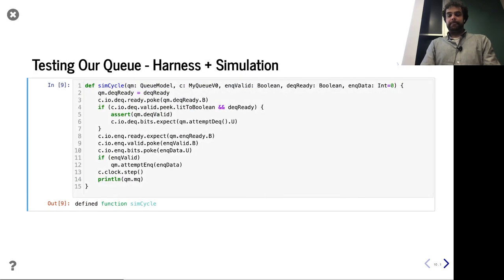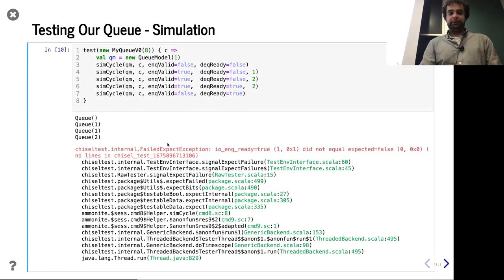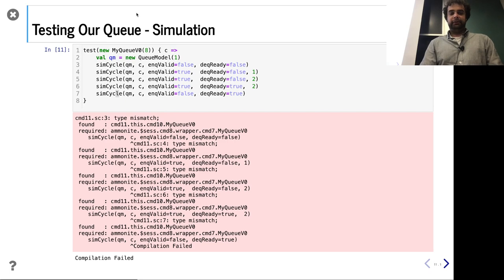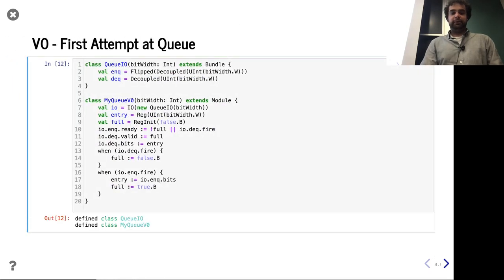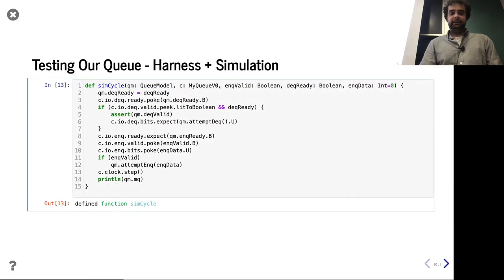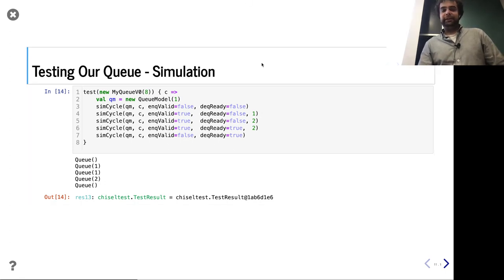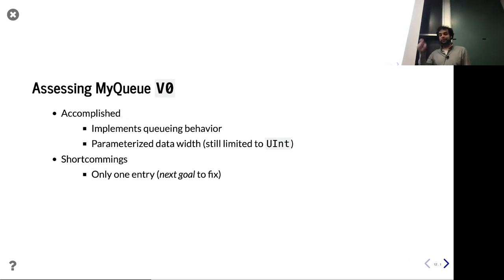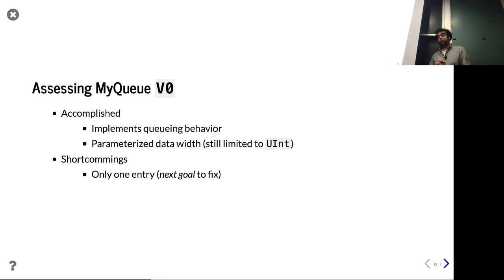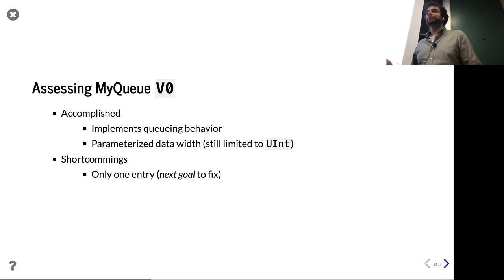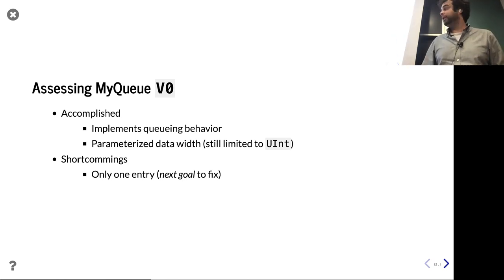Getting the exact logic right — it's a little bit tricky on an electric screen. We have a working queue. It's technically a queue with correct queueing behavior. We parameterized the data width. But we have shortcomings: it's only one entry — it's really just a register with some handshaking around it. So how can we go about adding multiple entries? As a more aggressive architecture, let's add in multiple registers. How we manage all these registers might be a little confusing — so think simple, get something working, make it better second.